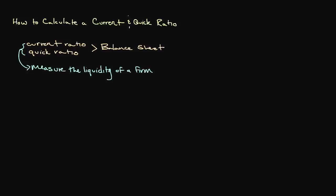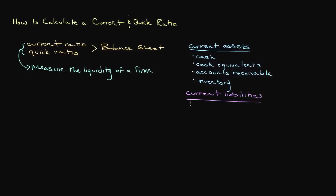These short term debt obligations are known as current liabilities and they include any liabilities that will become due within one year. Common current assets include cash, cash equivalents, accounts receivable, inventories, as well as other short term investments. Common current liabilities include things like accounts payable, wages payable, interest payable, as well as other short term debt obligations.